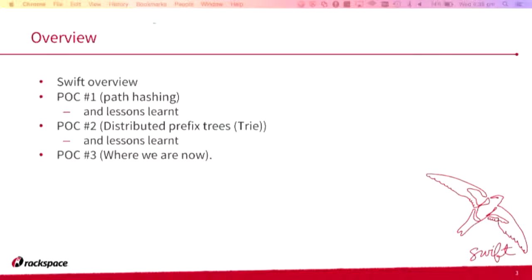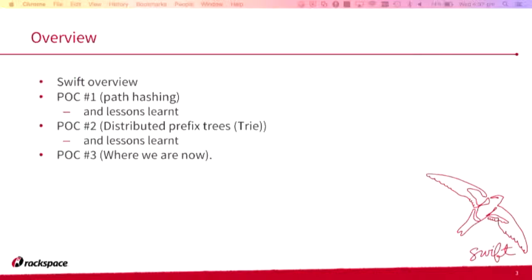What we're going to go over in this talk: first, a Swift overview — not a full 101 because we just don't have time. Then I'll go through a couple of proof of concepts — POC 1, 2, and 3. When I submitted this talk I thought I'd solved it in POC 2, but that didn't happen. So we've now moved on to POC 3, really 3.5, but I'm not going to go there.